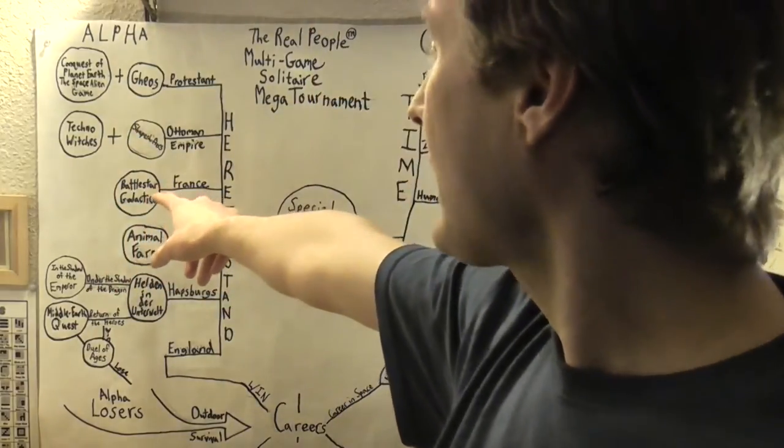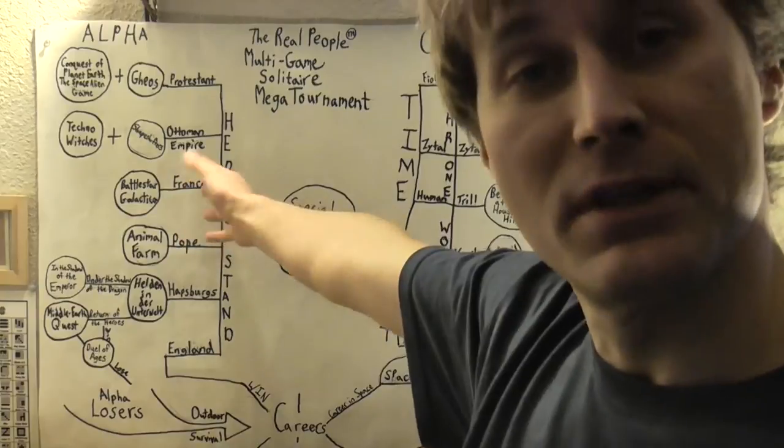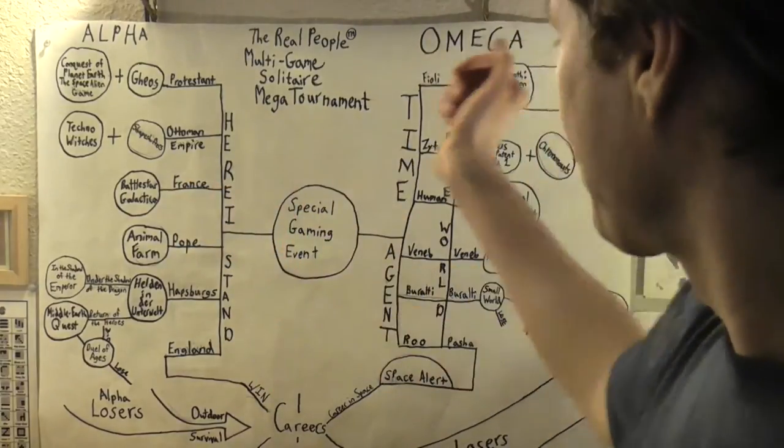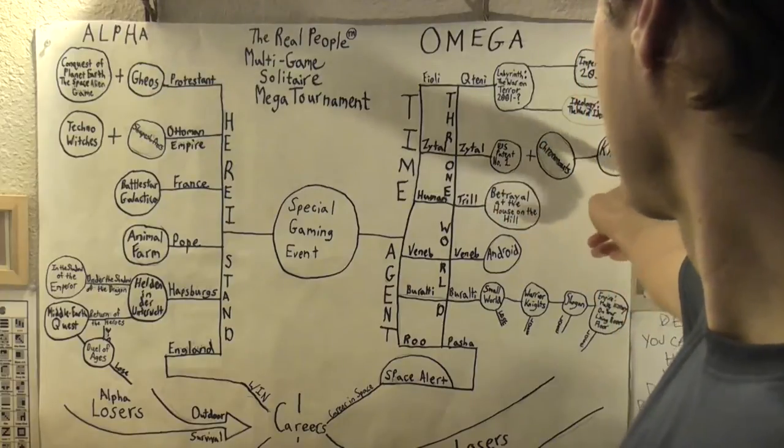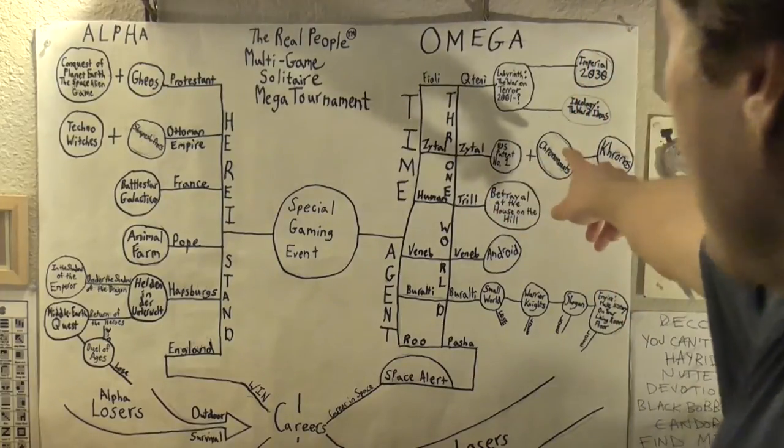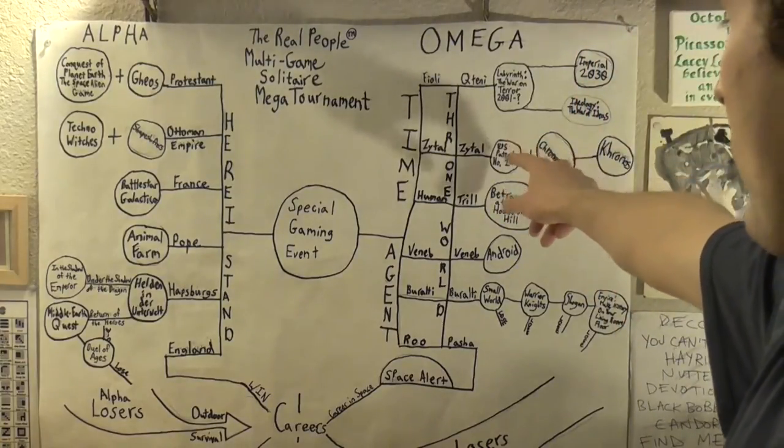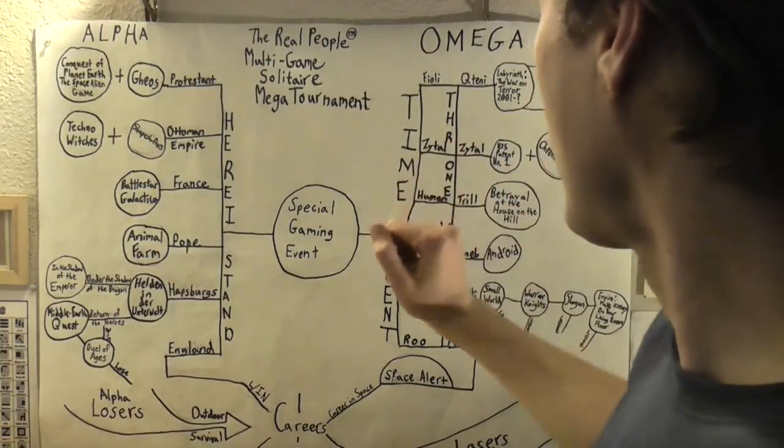The person who wins Battlestar Galactica, for example, gets to be the French in Here I Stand. The person who wins Chronos and then a combination game of Chrononauts and US Patent Number One gets to be the Zytol in both Throne World and Time Agent.